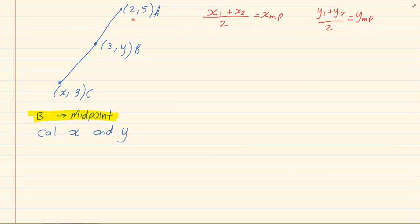Now we mark our x1 and x2. We know that B is the midpoint, so that is not going to be our x1 and y1. So we marked our x1, y1, x2, y2.